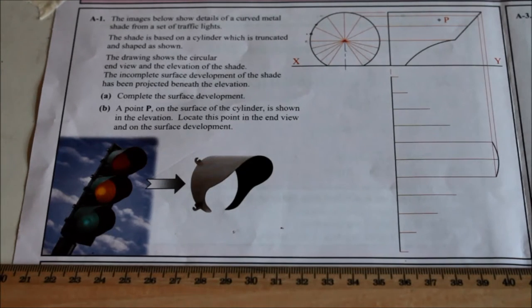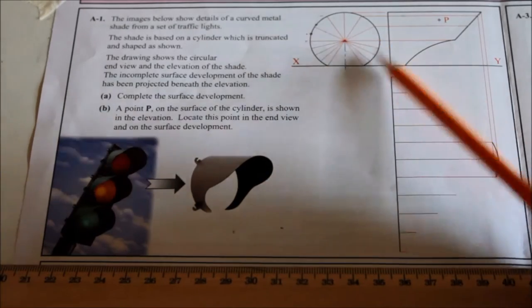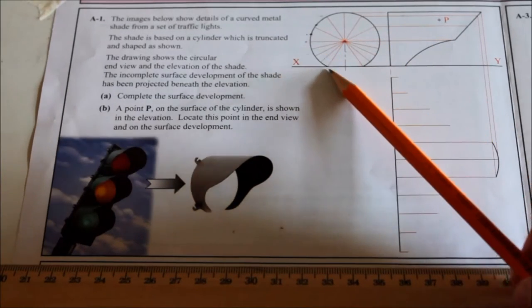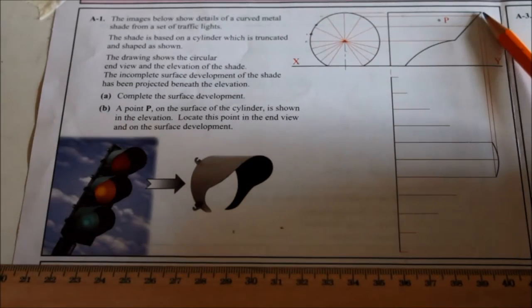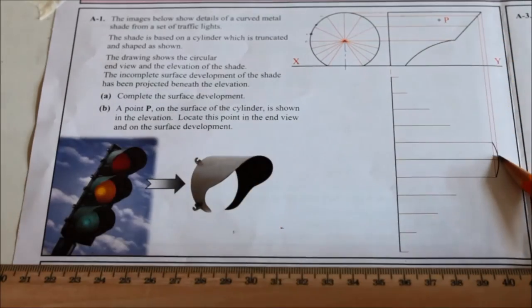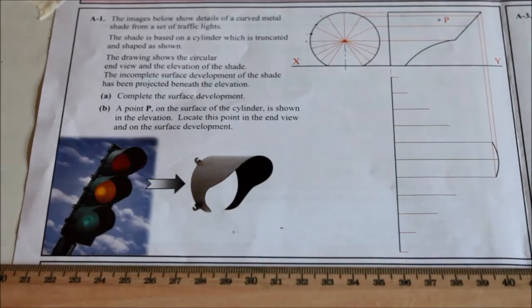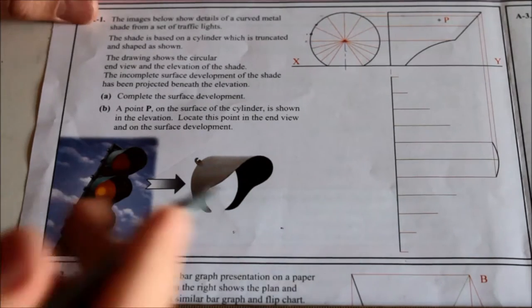We'll do the surface development first. Now, if you look at this for higher level, look at all the detail they're giving you. They've divided up the end view here—30, 60—and then slightly smaller again for the bottom curve there. They brought those points over to the outline of the elevation, projected it down, and found your points. Maybe what we should do is label what they've given us.